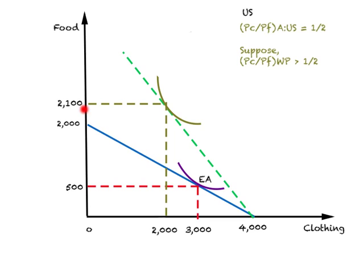Now look at the slope of this PPC. It will be 2,000 divided by 4,000, which equals one half. This slope of the PPC represents the relative price of clothing in the U.S. in autarky, and that value is one half.